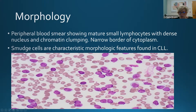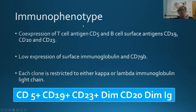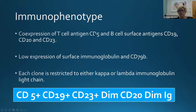A lot of what we do in lymphoproliferative disorders these days has veered away from morphology and leaned heavily into immunophenotyping. CLL cells are CD5 positive, CD19, CD20, and CD23 positive. They have low expression of surface immunoglobulins and CD79B. So CD5, CD19, CD23, and CD20 positive.